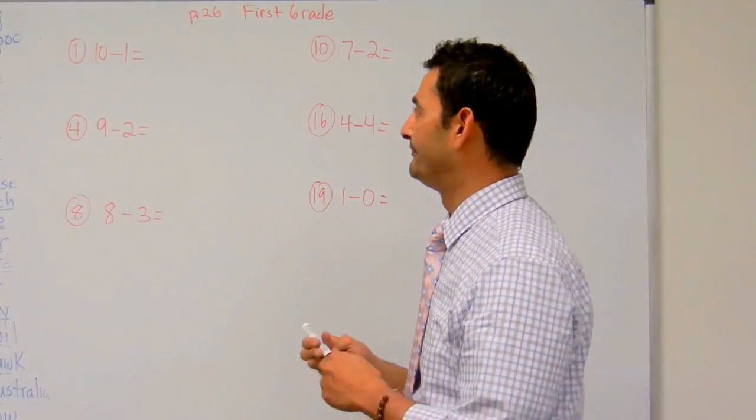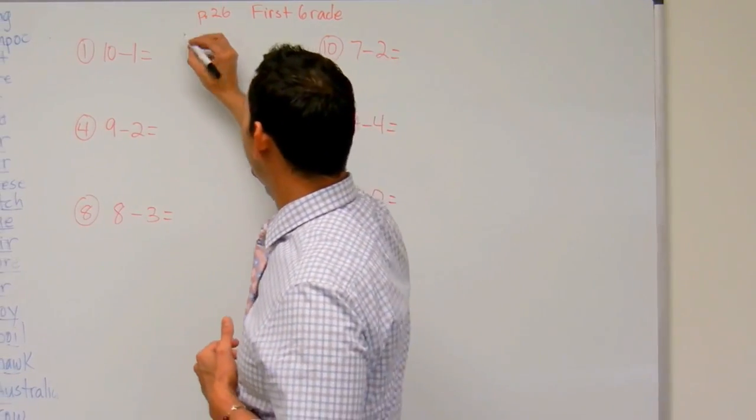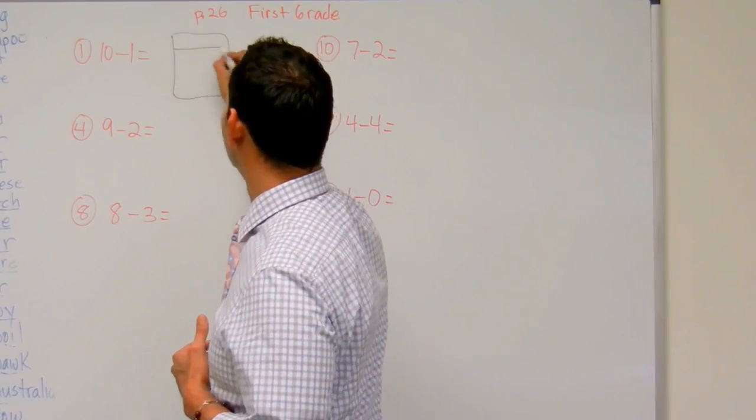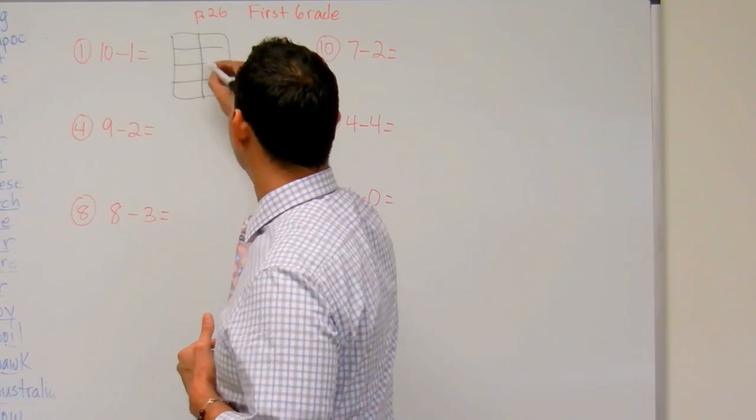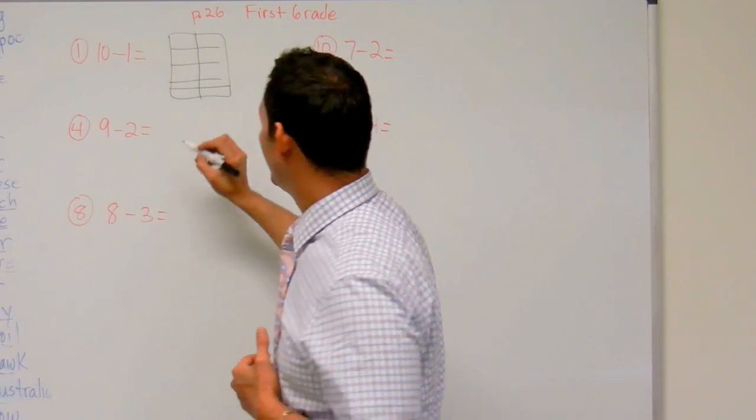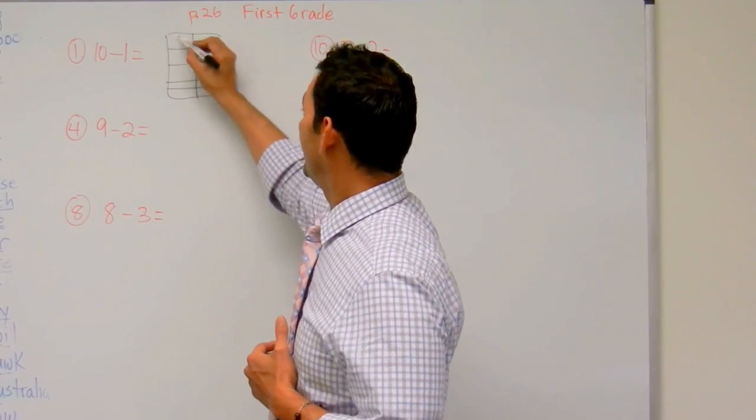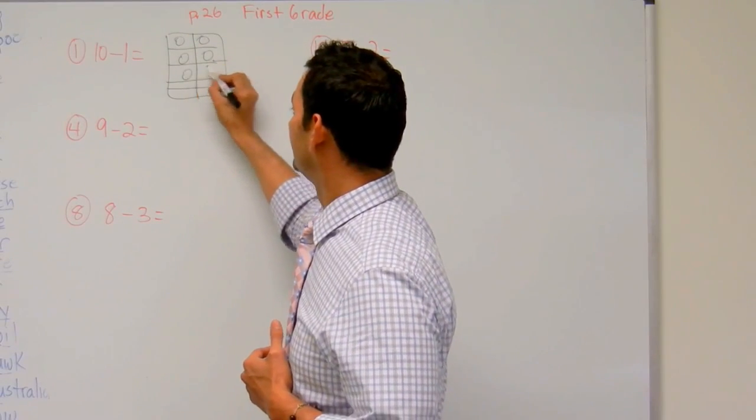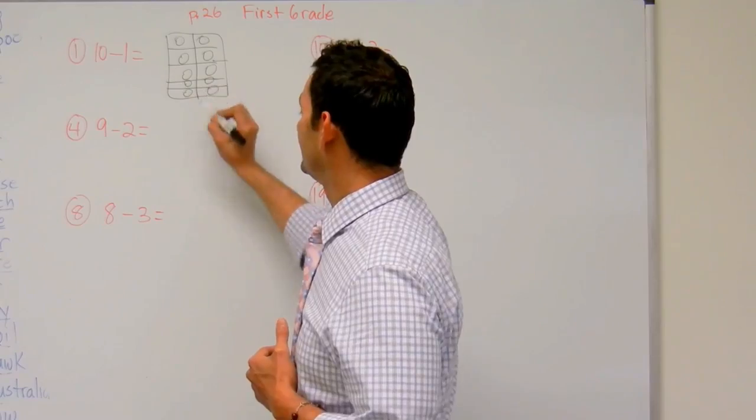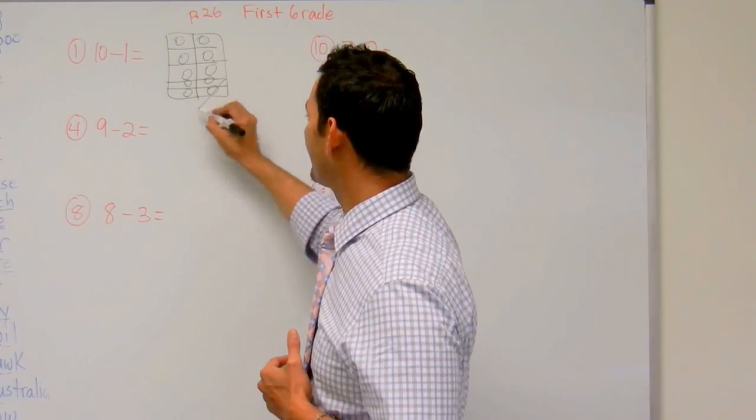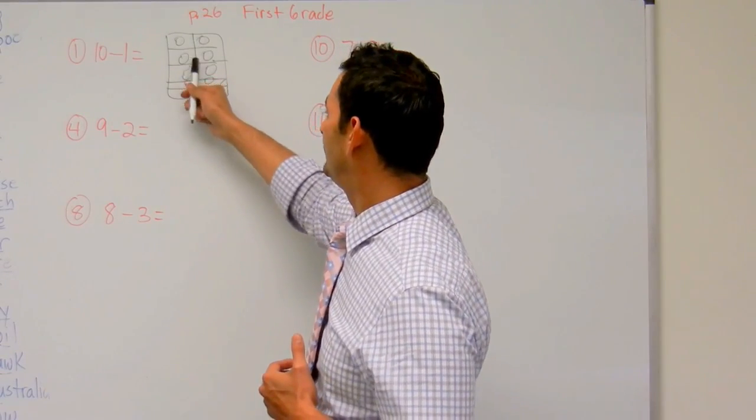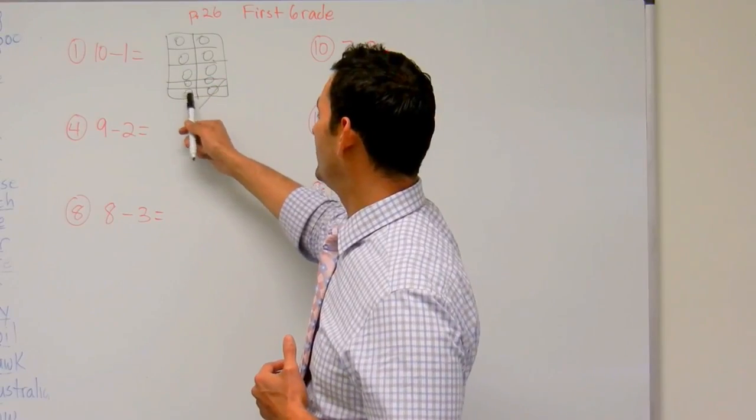Here we have 10 minus 1. So what I'm going to do here is use this 10 picture here, this 10 block, and I'm going to draw 10. There's 10 there. I'm going to take away 1. So now I have 2, 4, 6, 8, and 1 more is 9. 10 minus 1 is 9.